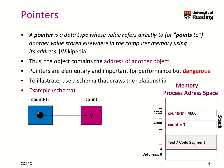Now we have a pointer, and this pointer shall point to our count object. So what is stored in this count pointer object? It stores the address of this object. The address was 4000, so we store address 4000 in count_ptr. However, where does this count pointer itself live? It must live somewhere in memory as well — for example, in the stack of another function, at address 4712.